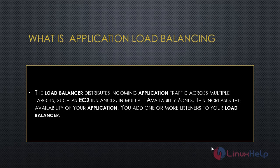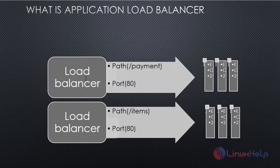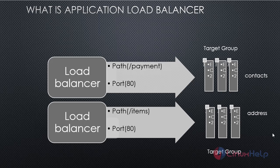Now let's look at the ALB concept. An Application Load Balancer is designed for microservices. In a microservices application, routing is generally done on the basis of port and path. The load balancer directly interacts with target groups. Here we have two target groups, each containing some instances, and the load balancer interacts directly with those target groups.